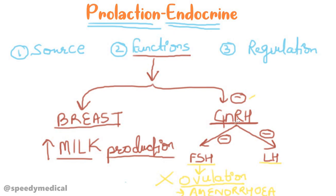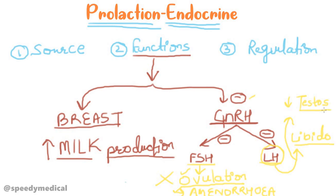The second consequence of decreased LH is decreased libido in males. Additionally, decreased LH leads to decreased testosterone in males. So as a result of decreased LH, there is first decreased libido and then decreased testosterone. These are the functions of the prolactin hormone.